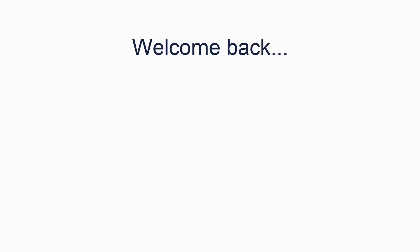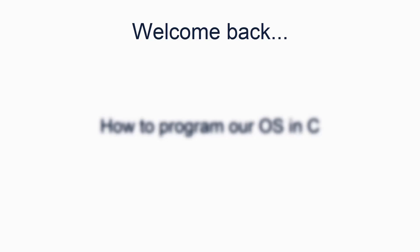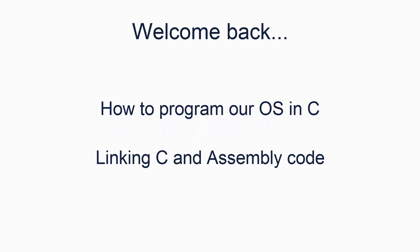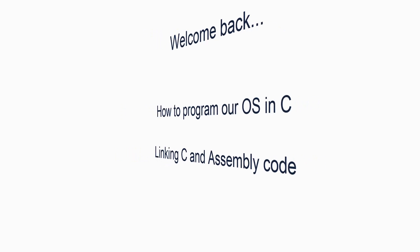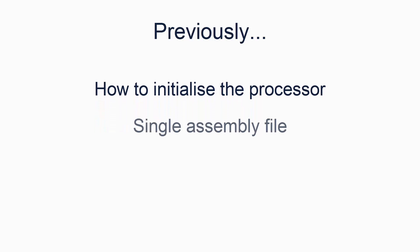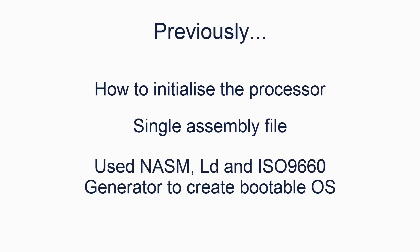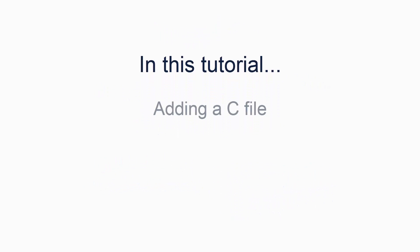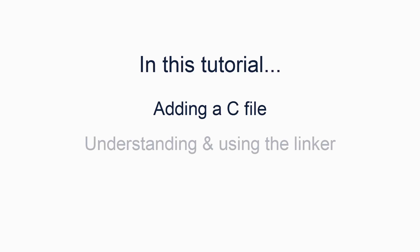Welcome back to this series of tutorials by Fling OS. In this tutorial we will be looking at how to program our OS in C and how to link together the C and assembly code. In the previous tutorial we looked at how to initialize the processor so it is in a known and stable state. Up until now we have only been using a single assembly file and the NASM compiler to build our operating system. The linker program LD was used briefly but unexplained. In this tutorial we will be adding the C language to our list and we will be using the linker software tool to much greater effect.